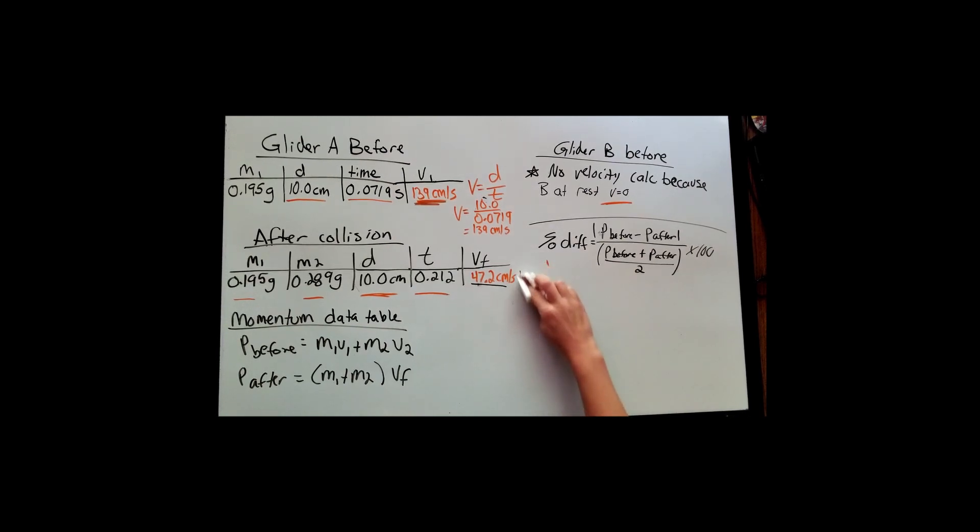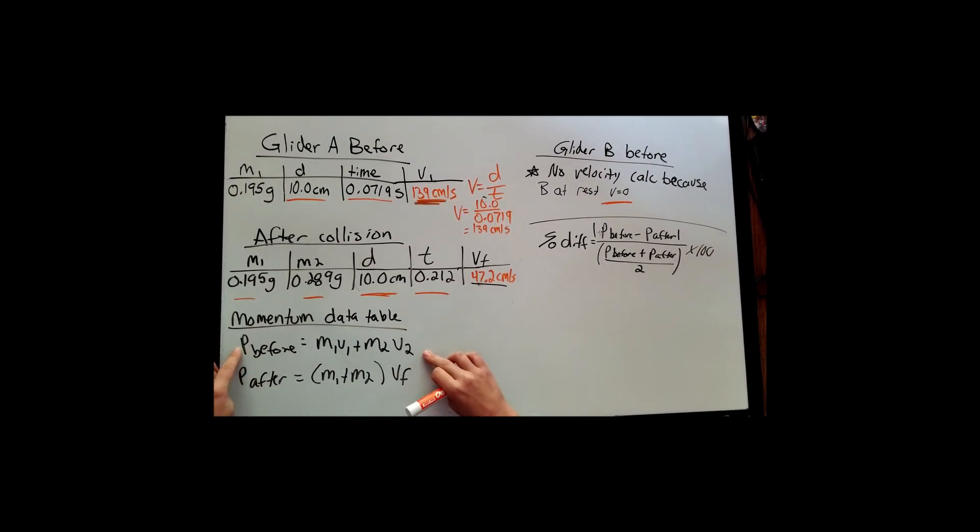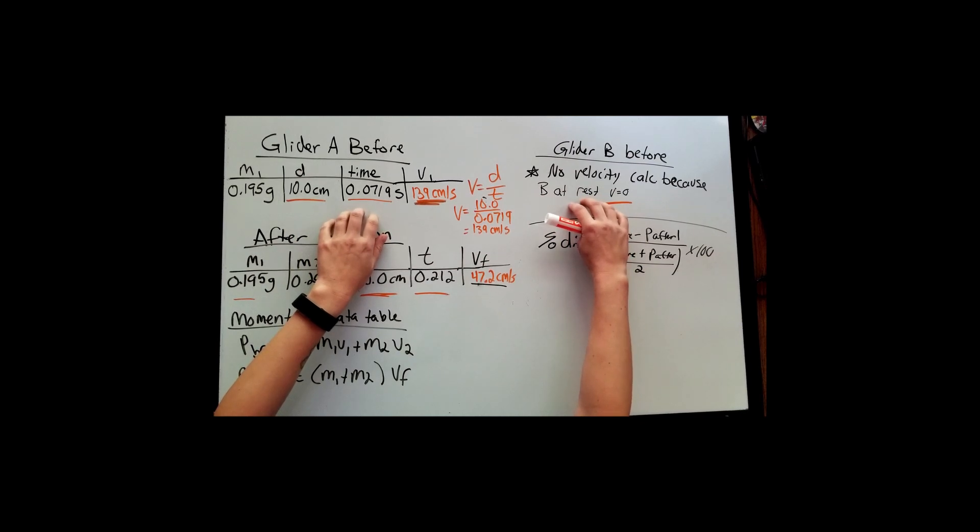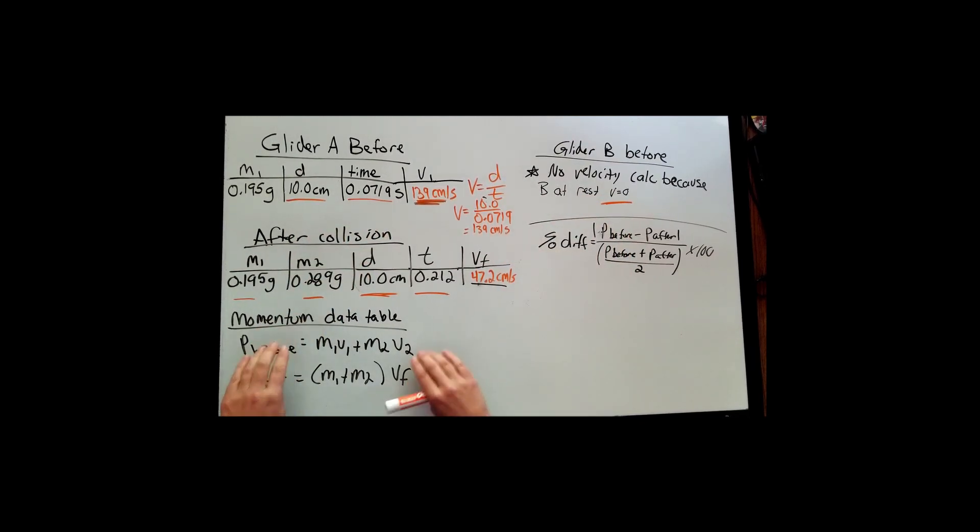I'm going to erase this part here so I have more room to show my calculations. So momentum data table. I didn't show the data table just in the interest of space because I wanted to show the calculations. I felt like that was going to be more helpful. So you are given equations for the momentum before. Remember this letter P stands for momentum. So we're going to calculate the momentum before glider A and B collided, and then we're also going to calculate the momentum after. We essentially took that big long equation and separated it into two parts, the before part and the after part. So we're going to be using these top tables up here for glider A and B to calculate the before momentum, and then we'll use this after collision table for the momentum after.